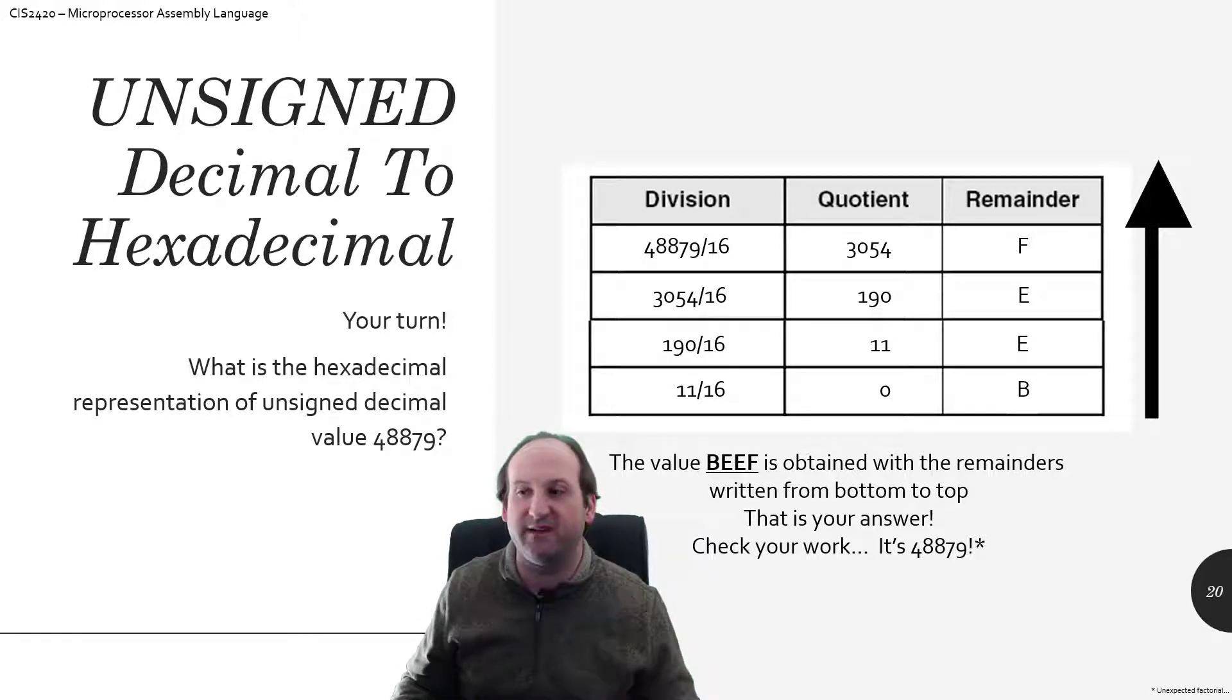So then 3,054 divided by 16 gets you down to 190, remainder 14, 14E. 190 divided by 16 is 11, remainder 14, and then 11 divided by 16 is 0, remainder 11, which is a B. So now that we have the quotient of 0 one more time, we take the remainders and we work our way backwards from bottom up. So the B, the E, the E, the F, that is the hexadecimal component, that is the conversion.